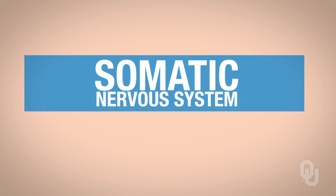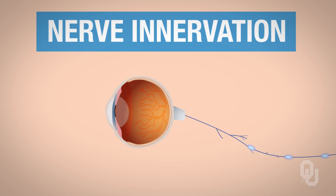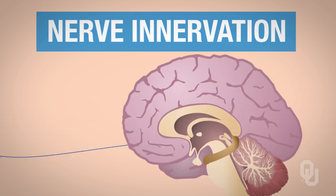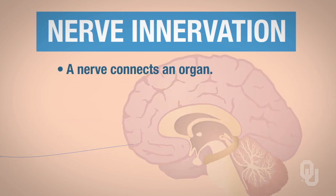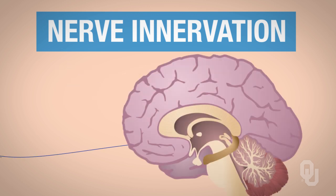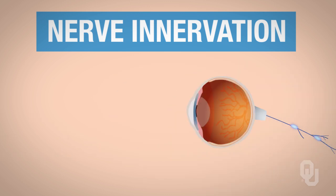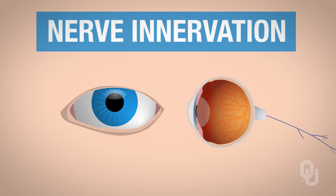When we say a nerve innervates the eye, for example, that means the nerve is connected to a certain region in the eye and the eye sends signals via this nerve to the brain. Innervate just means that a nerve connects an organ and signals are sent from or delivered to that organ via a nerve. For example, if we take the sympathetic nerve that innervates the eye, when that sympathetic nerve is stimulated, it will cause the pupils to dilate.